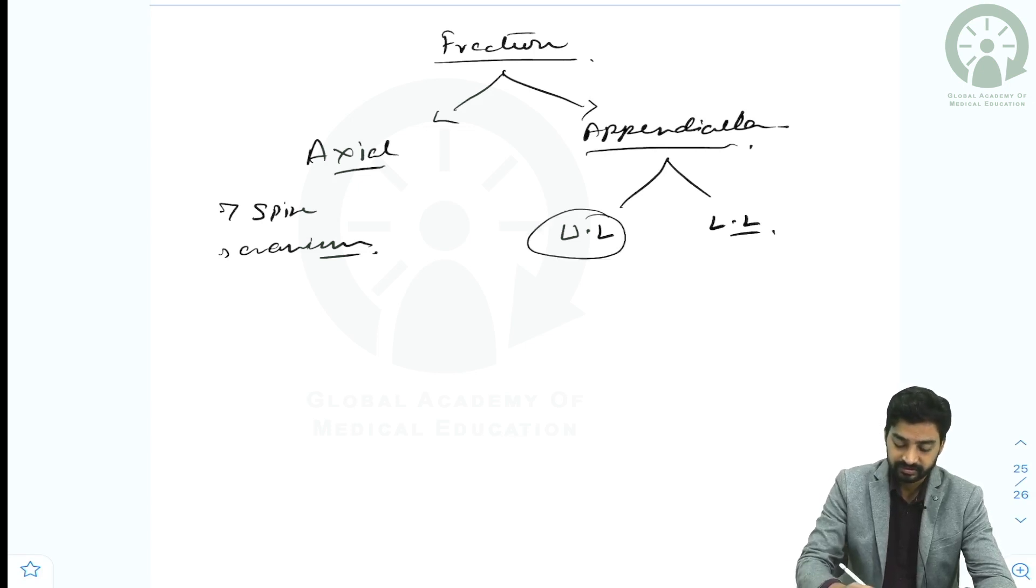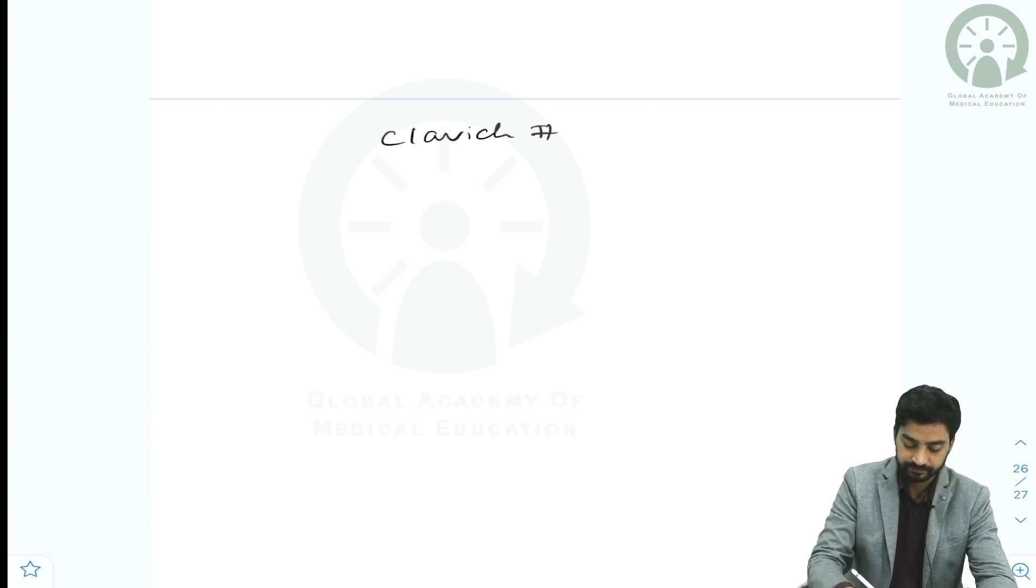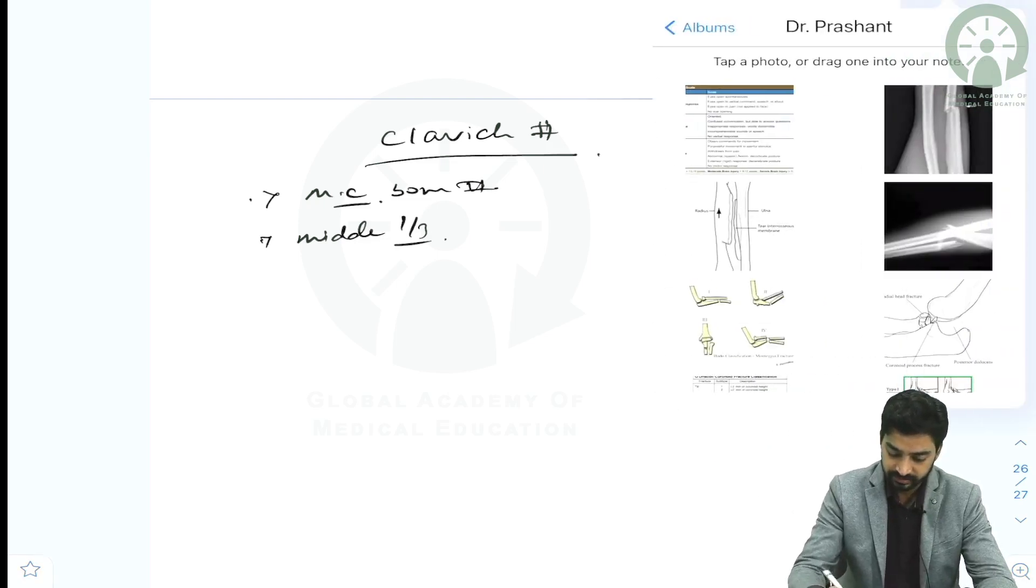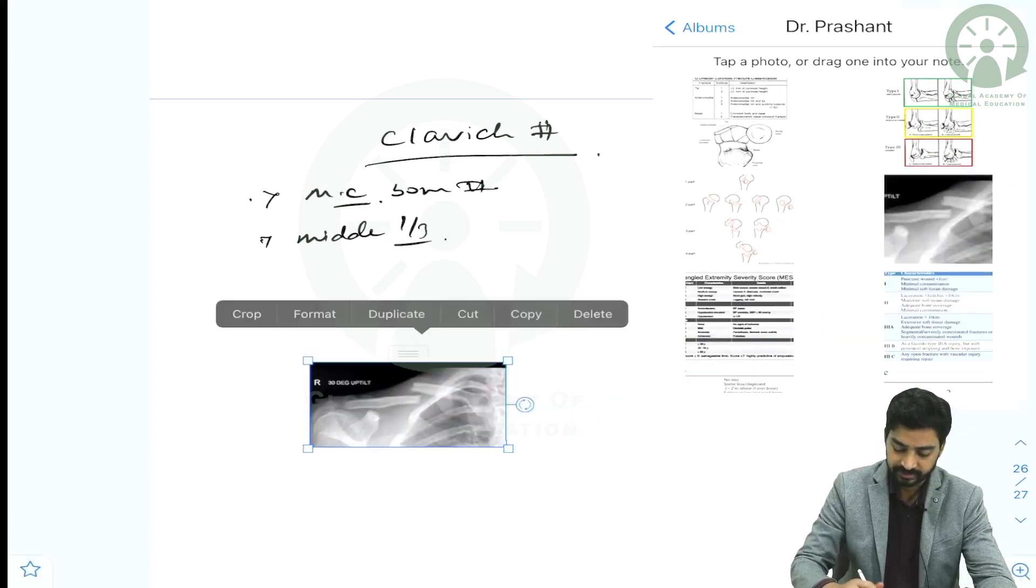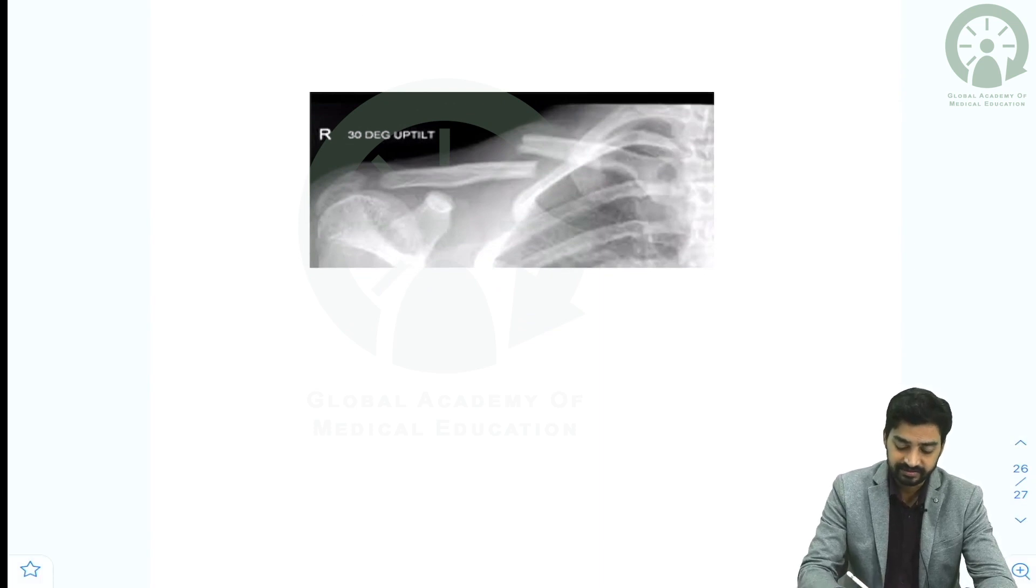In this part, we will discuss upper limb. As you can see, the first fracture is the clavicle fracture. Clavicle fracture is the most common bone to get fractured, and the most common site is the middle one-third part. If you see the fracture pattern, you will get an idea.